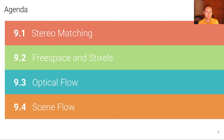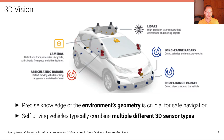Before diving into stereo matching, let's motivate 3D perception for self-driving. Precise knowledge of the environment's geometry is crucial for safe navigation. For example, when a vehicle has to swerve around a parked vehicle, it must pass closely without hitting it, requiring good knowledge of the local geometry.